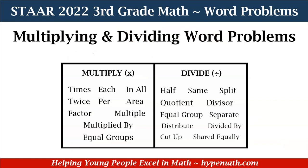Now let's look at some words we may read whenever we see word problems and it means multiplying or dividing. For multiplying, we see: times, each, in all, twice, per, area, factor, multiple, multiplied by, and equal groups.